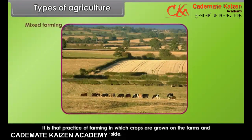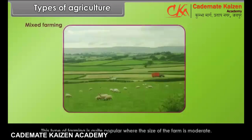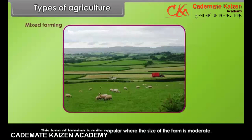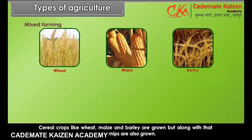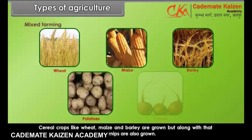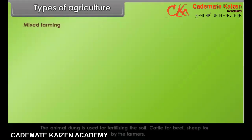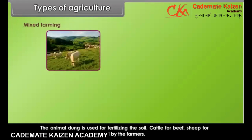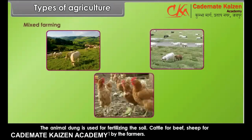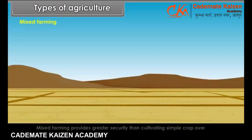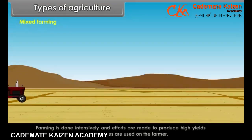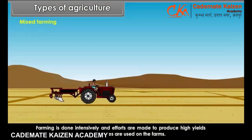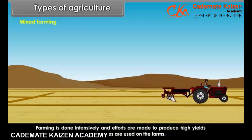Mixed farming is that practice of farming in which crops are grown on the farms and cattle are also reared side by side. This type of farming is quite popular where the size of the farm is moderate. Cereal crops like wheat, maize and barley are grown, but along with that, root crops like potatoes and turnips are also grown. The animal dung is used for fertilizing the soil. Cattle for beef, sheep for mutton and poultry are reared by the farmers. Mixed farming provides greater security than cultivating a single crop over a large area. Farming is done intensively and efforts are made to produce high yields per hectare, and necessary machines are used on the farms.